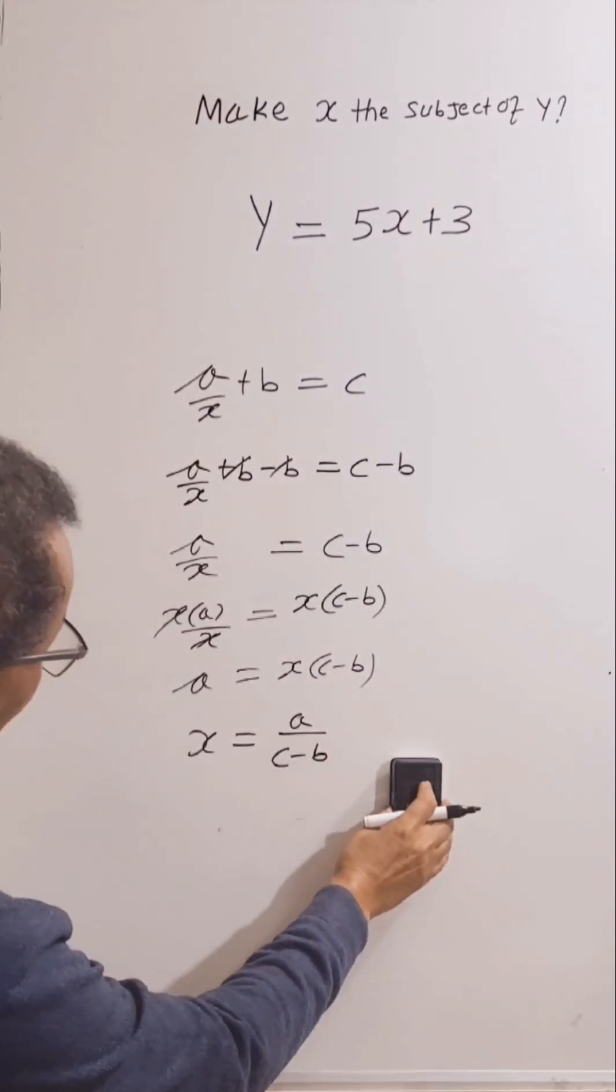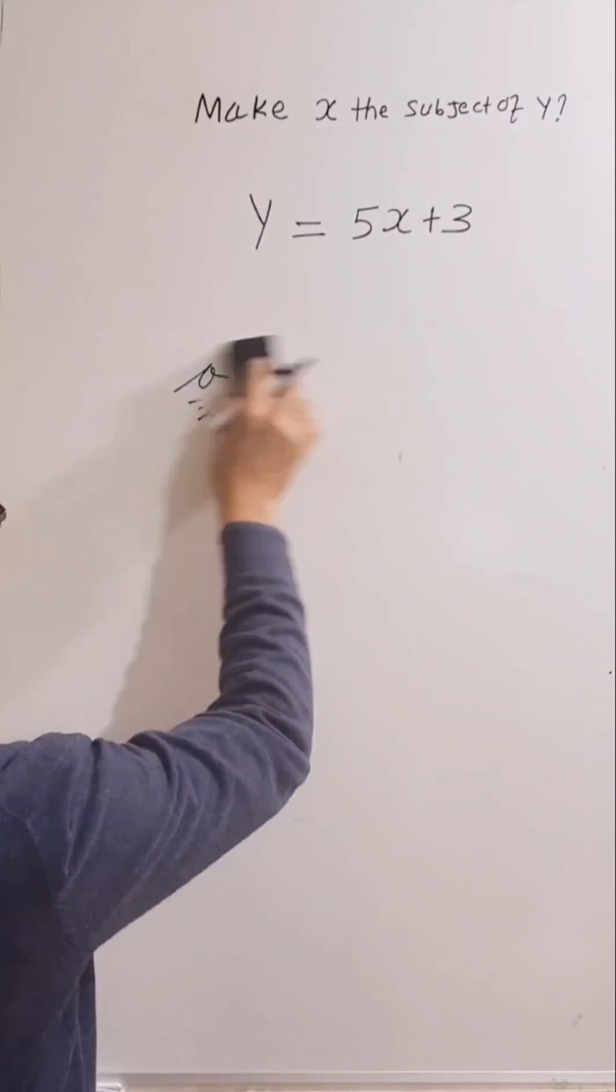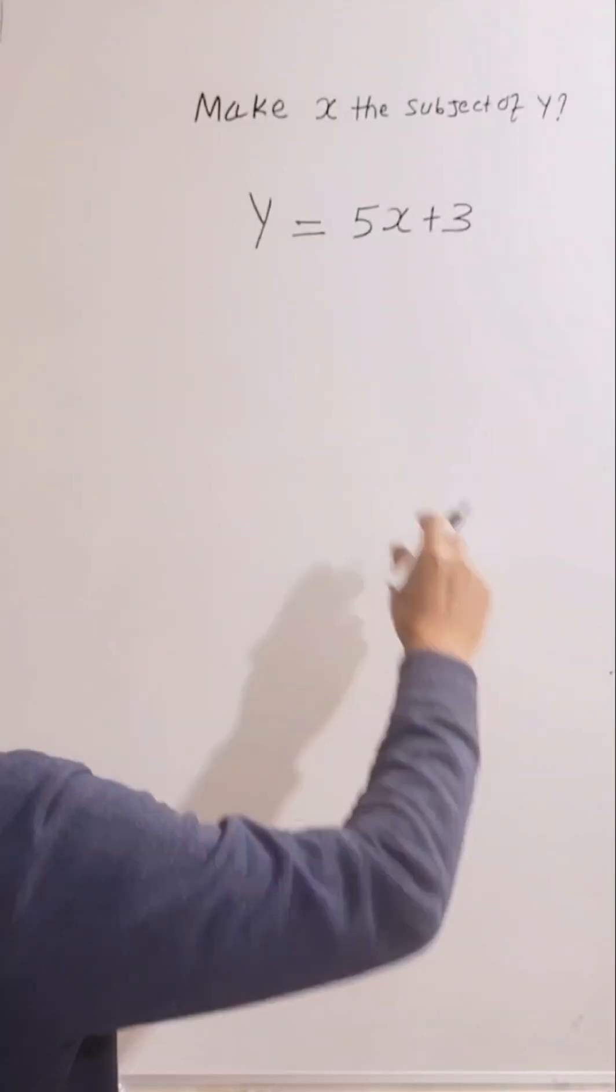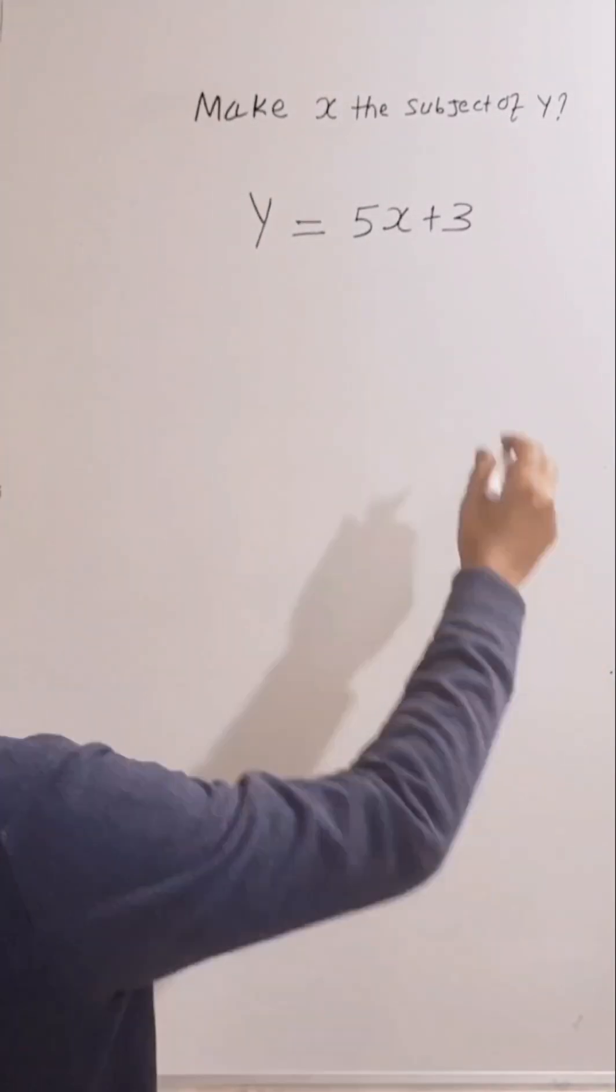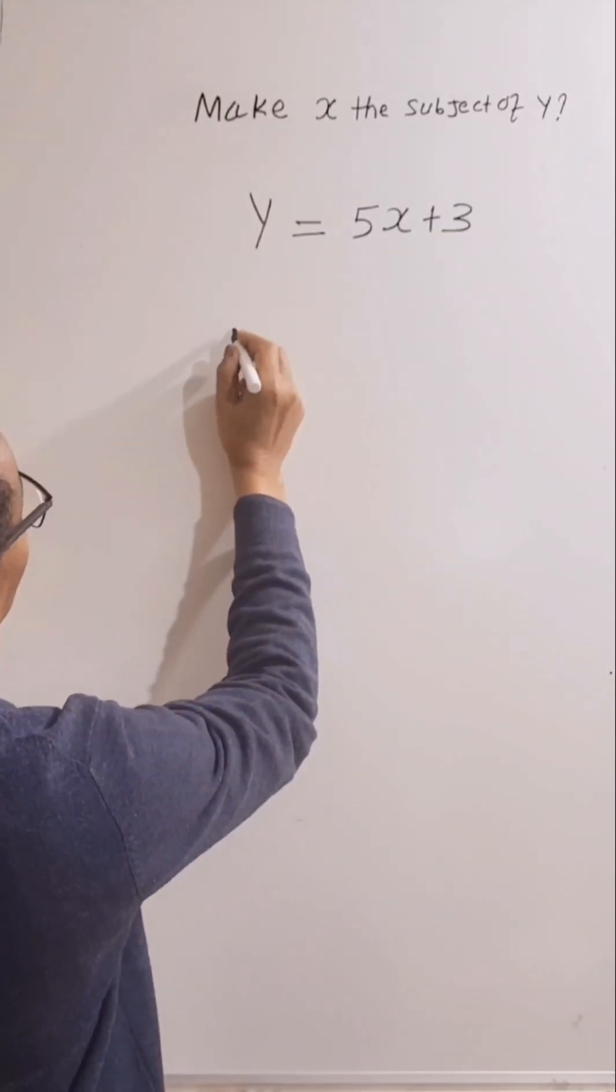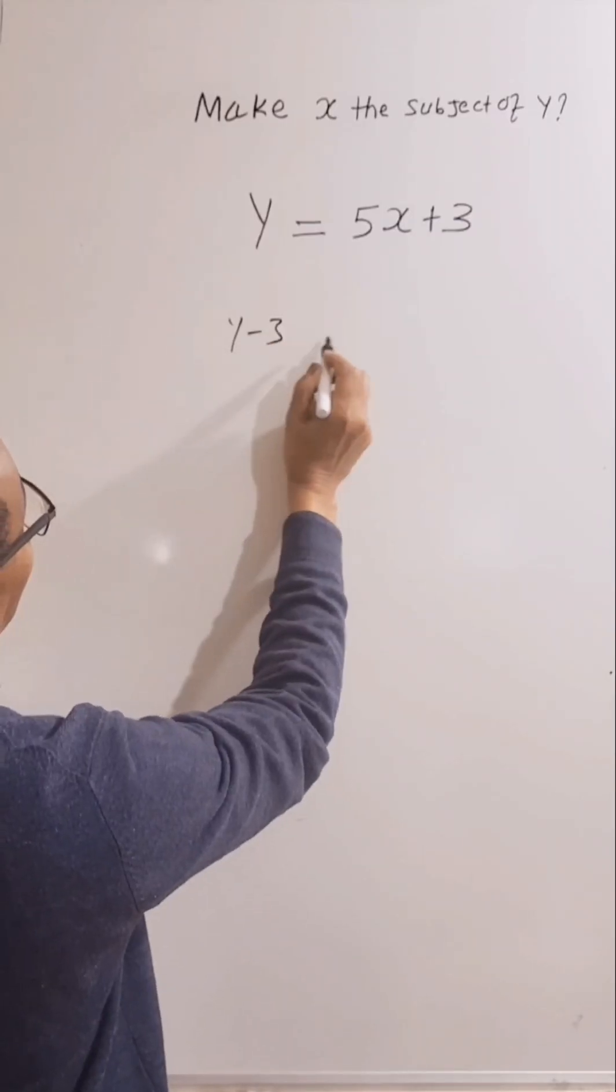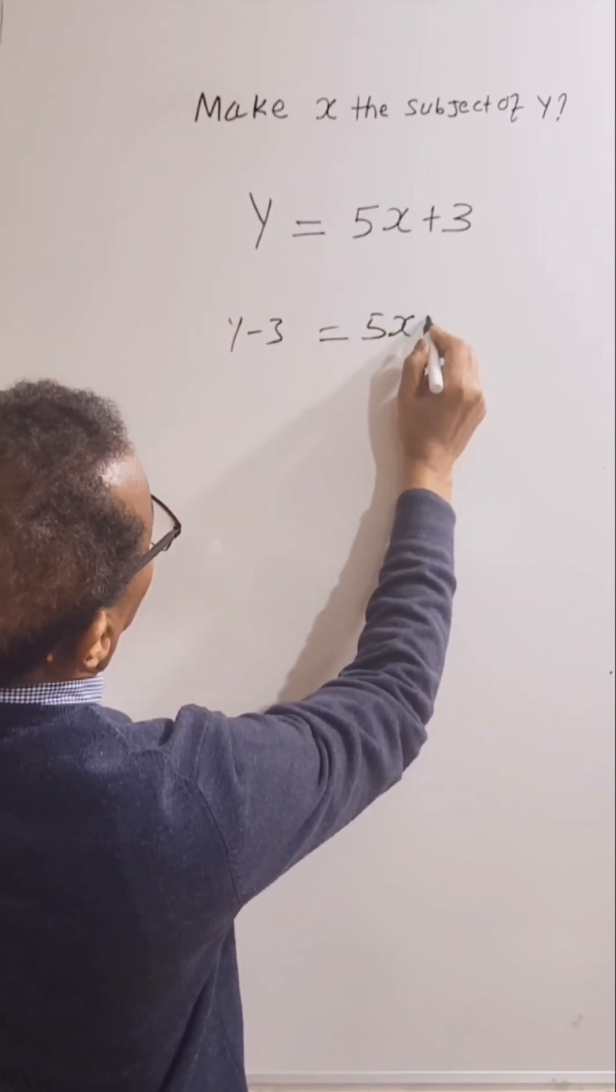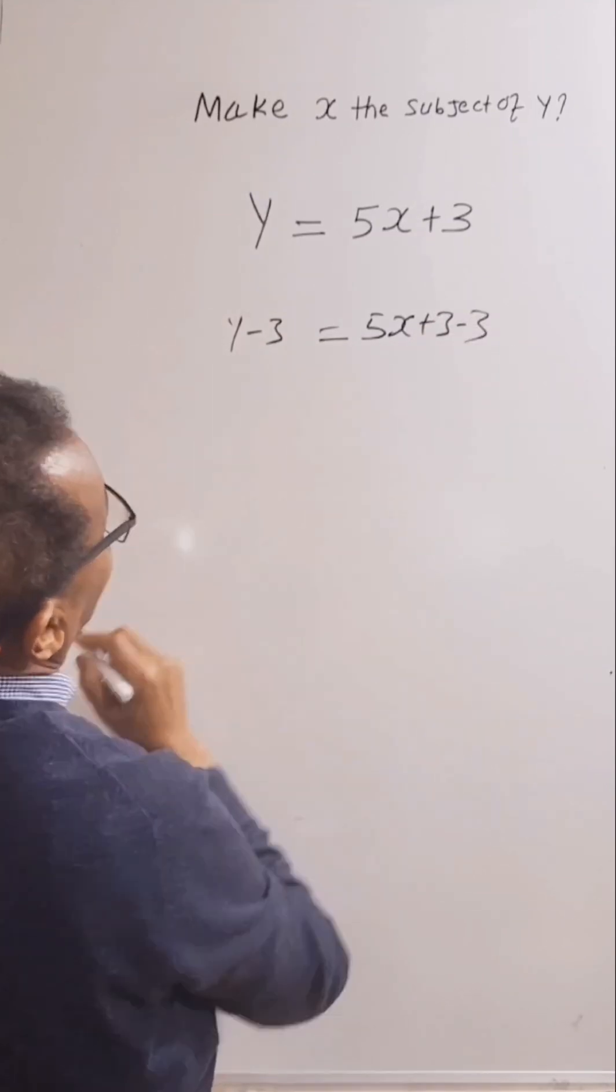So let's go back to the question then. So y equals 5x plus 3. Let's subtract 3 from both sides. y take away 3, equal 5x plus 3, take away 3.